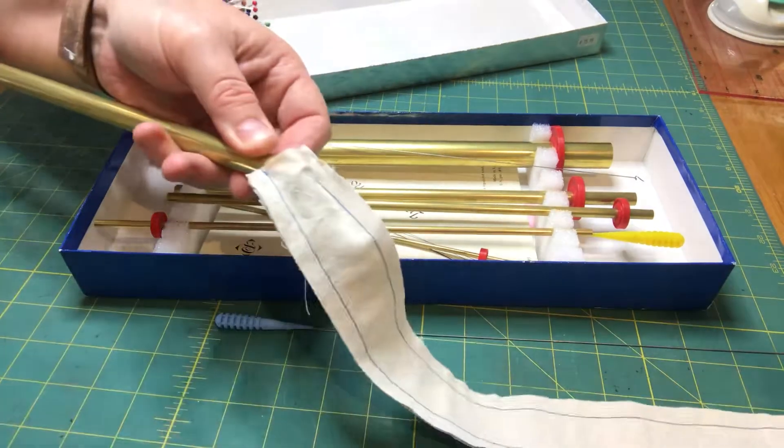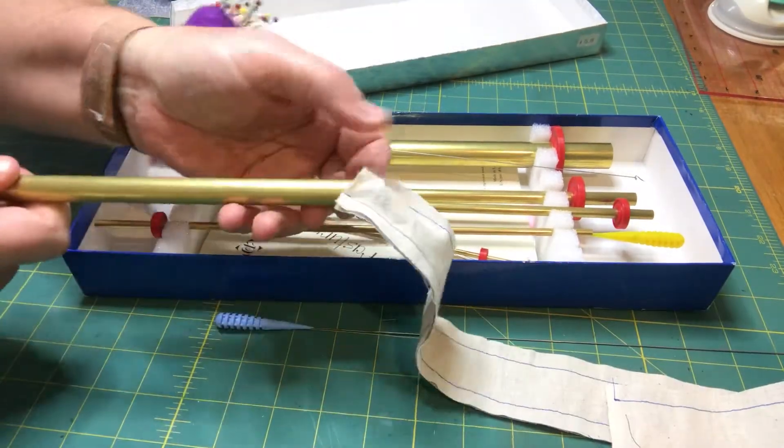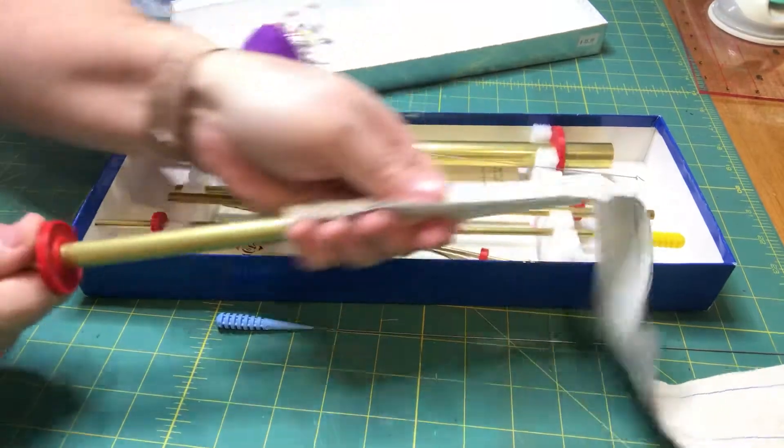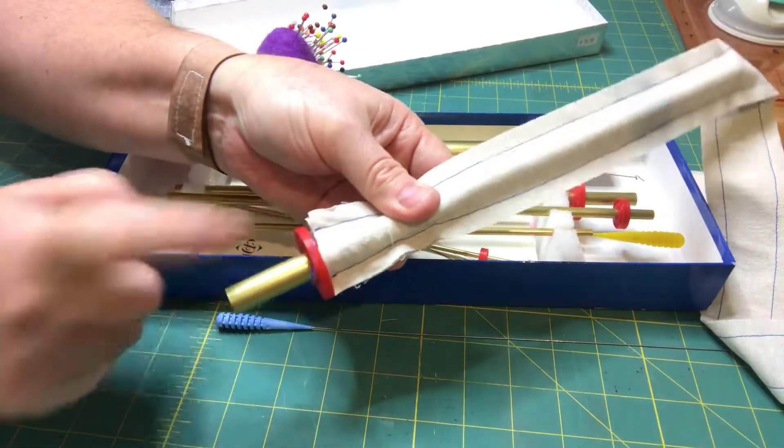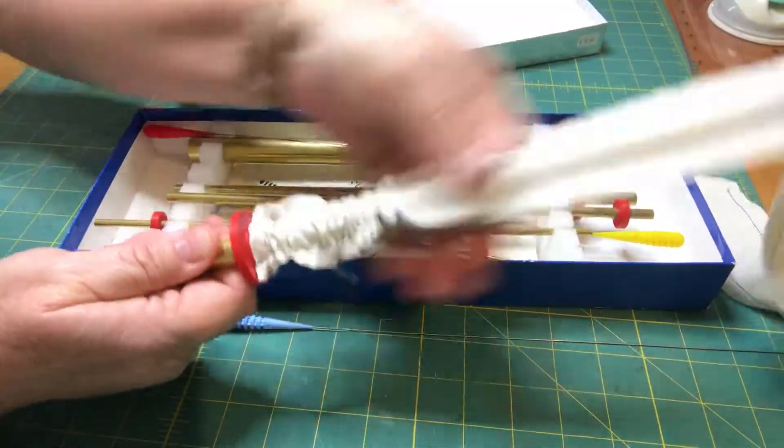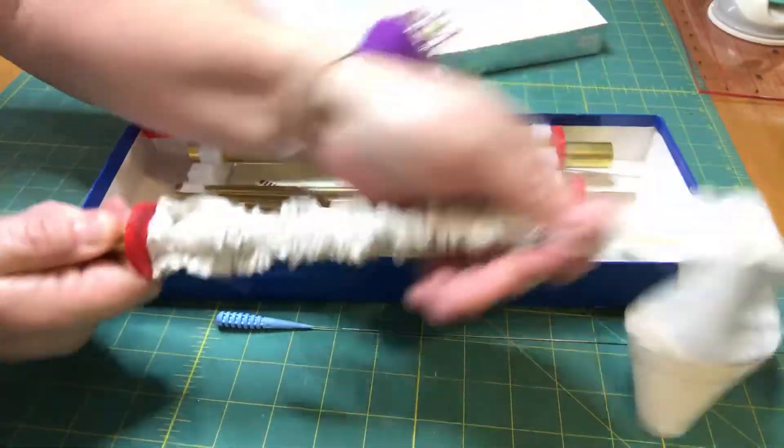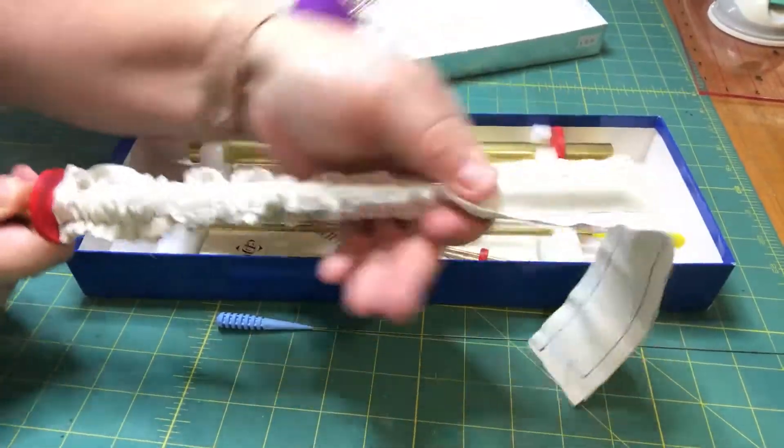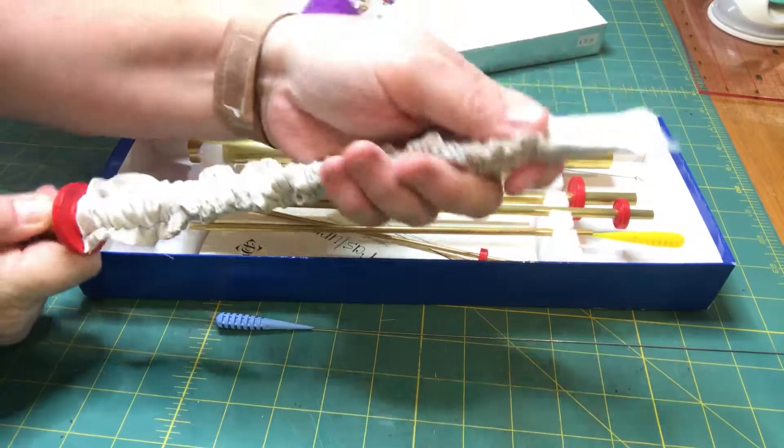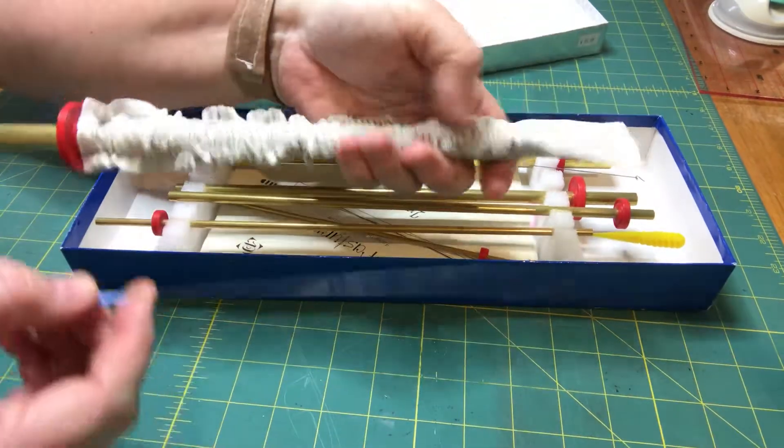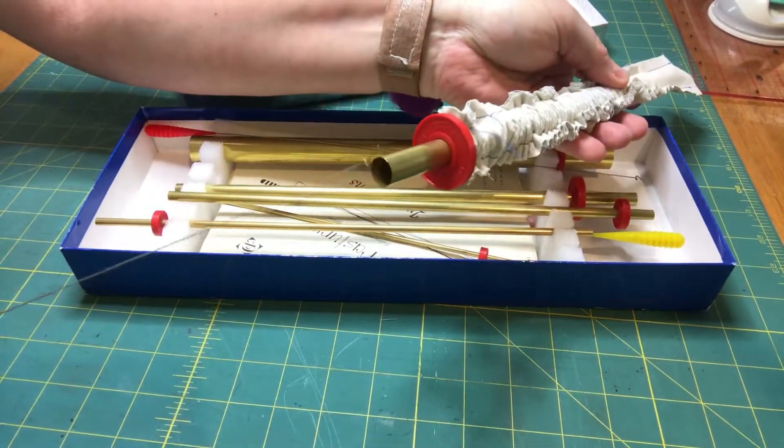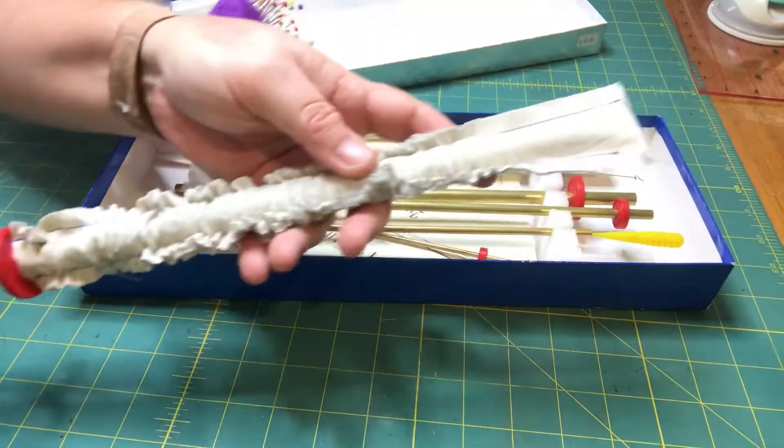So what I do then is I thread the tube all the way through and it's got a stopper up this end so I can't make a mistake and get it lost in there, all the way through. And then I get the turning wire, I pop it in the end and all the way out.